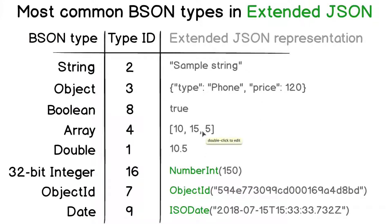That's because there is a corresponding value type in the JSON format, and there is no need to add additional information such as, for example, NumberInt.